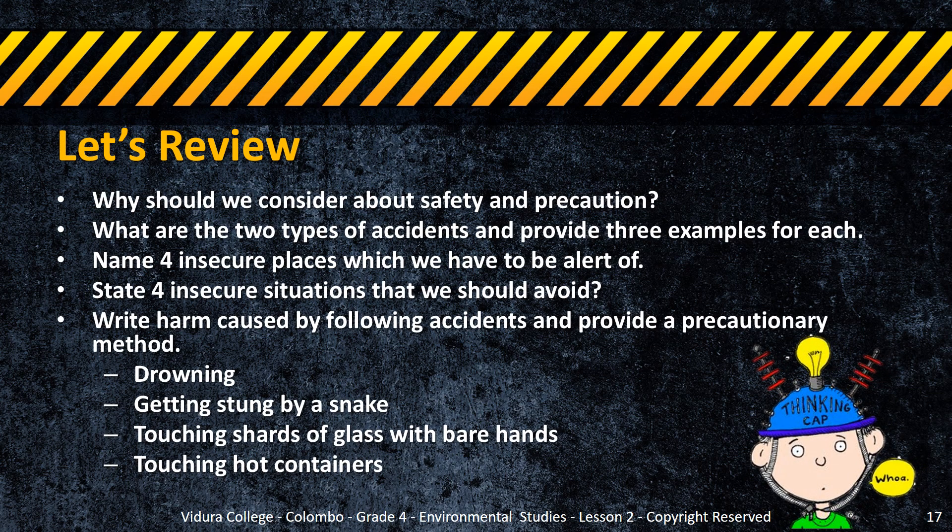Okay, it's time to review. Try to answer the following questions using your thinking caps. Why should we consider safety and precaution? What are the two types of accidents, and provide three examples for each? Name four insecure places which we have to be alert of. State four insecure situations that we should avoid. Write the harm caused by the following accidents and provide a precautionary method.